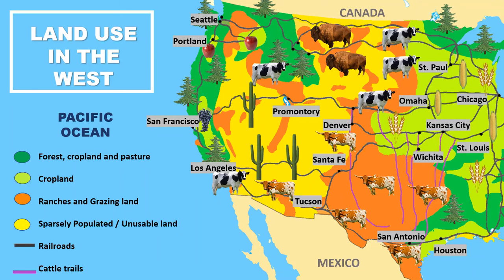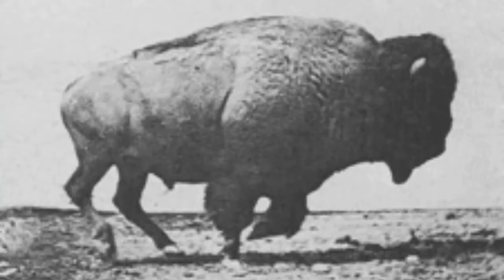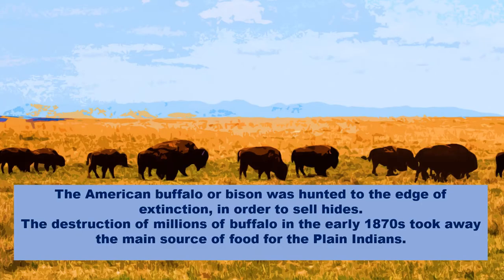Take a look at this map that shows land use in the West. Identify the area where cattle was raised, shaded in orange, and the area used to grow crops in light green. Notice how the railroad network greatly expanded, and look at the purple lines representing cattle trails connecting ranches to railroad lines. The American bison, or buffalo, was hunted to the edge of extinction in order to sell hides. The destruction of millions of buffalo in the early 1870s took away the main source of food for the Plains Indians.